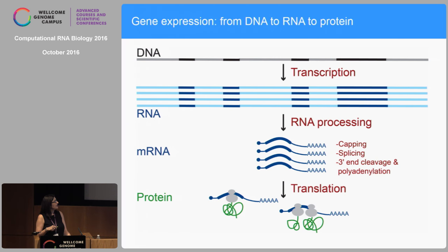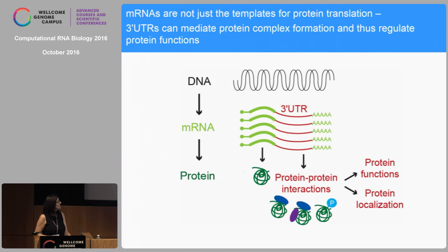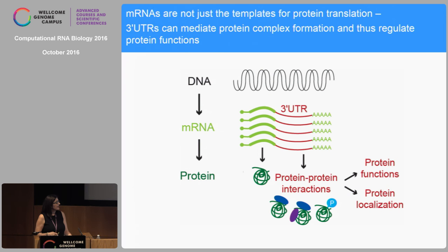These processing steps are capping, splicing, and then at the 3' end there is cleavage of the primary transcript and the addition of a poly-A tail. This is very important because only mature mRNAs can be exported into the cytoplasm and can be translated. The central dogma states that DNA makes RNA and RNA makes protein. Most people regard mRNAs just as templates for protein synthesis, which is partially true because the coding region is translated into protein. But an mRNA also has untranslated regions at the 5' end and at the 3' end.